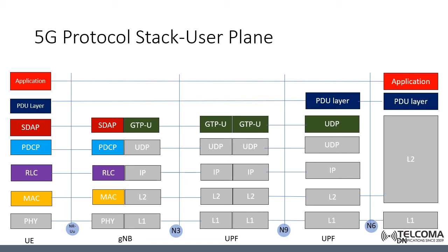Secondly, the PDCP layer, or Packet Data Convergence Protocol layer, has many functions and services, including sequence numbering, header compression and decompression, transfer of user data, reordering and duplicate detection, and finally, ciphering and deciphering.